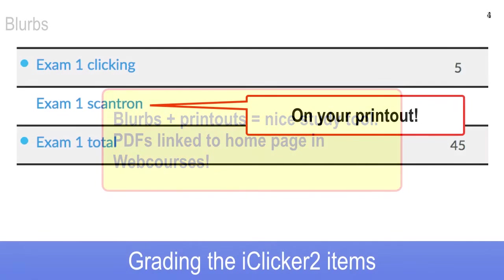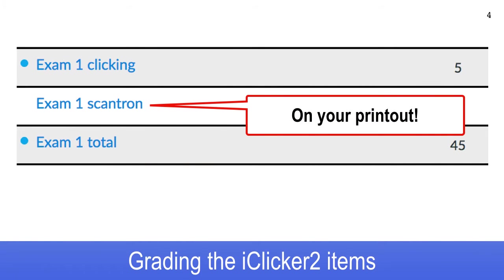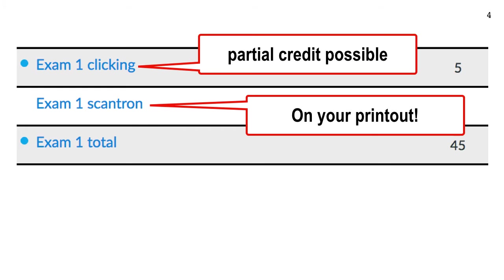Now I want to talk about your clicking. This is what the grades page looks like. Your exam one Scantron is embargoed right now — on mute. I hit the mute button, and usually I do that until I hand back printouts. This afternoon I'll unmute that row of your grades page and you'll see what's on your printout. The exam one clicking is right above that, and it tells you how many points you scored out of a possible seven — four regular and three bonus.